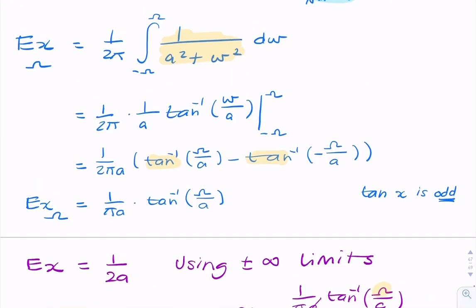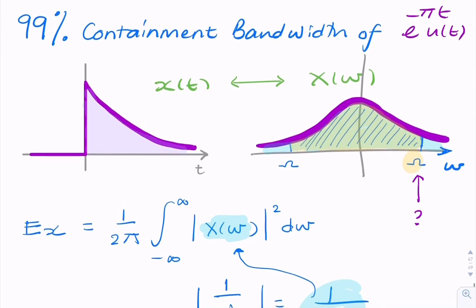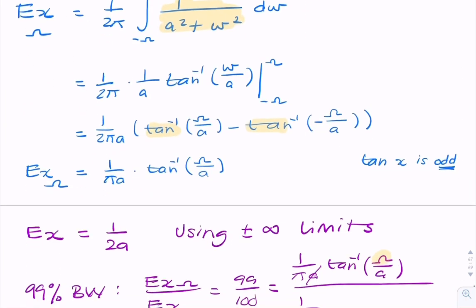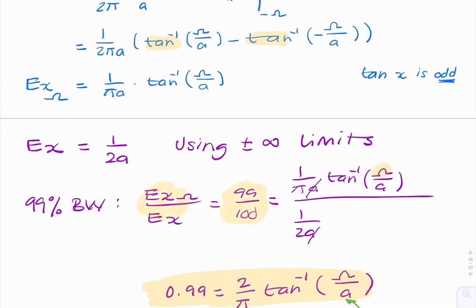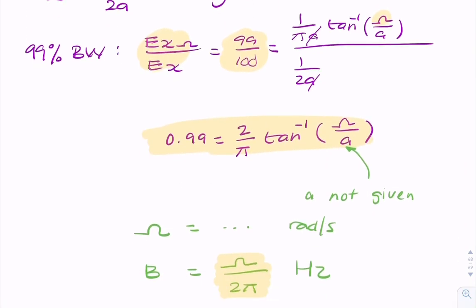So what we've just found was the 99% containment bandwidth. It could have been the 95% or 90% containment bandwidth, but the approach is always the same. You start with your signal in the time domain, convert it to the frequency domain, then use Parseval's theorem to integrate between both minus infinity and infinity, and between minus omega and omega. Then find the ratio of the two, and simplify and solve for omega.